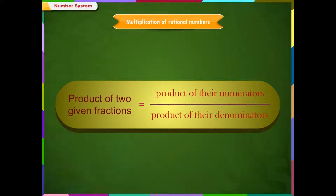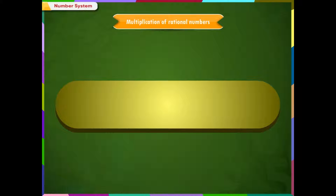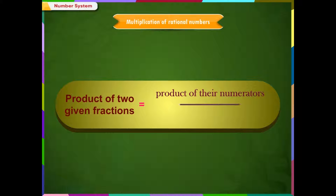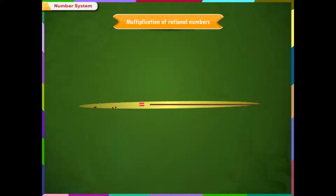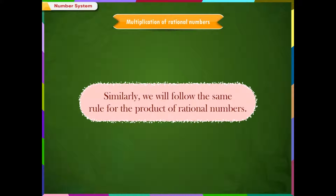To learn multiplication of rational numbers, let us recall how to multiply two fractions. The product of two given fractions is a fraction whose numerator is the product of the numerators of the given fractions and whose denominator is the product of the denominators of the given fractions. Similarly, we will follow the same rule for the product of rational numbers.